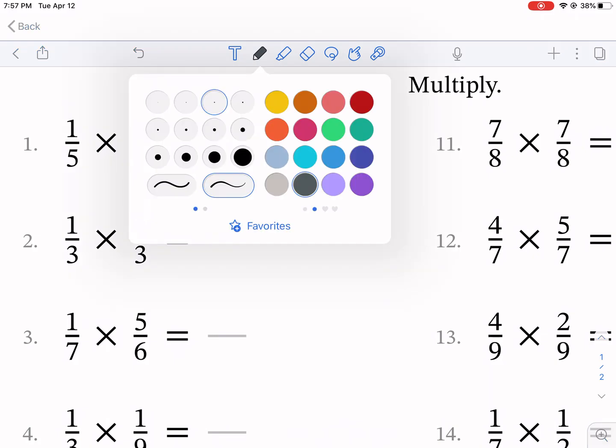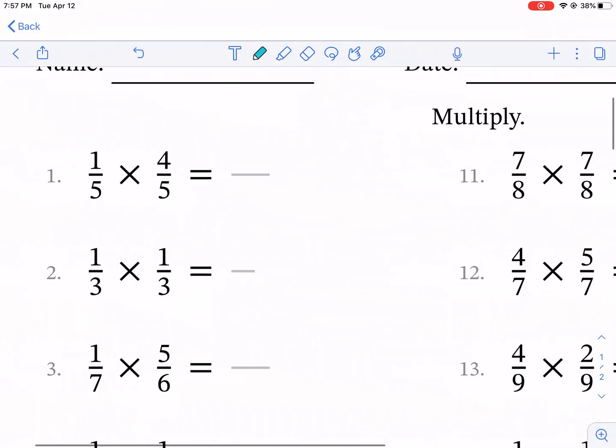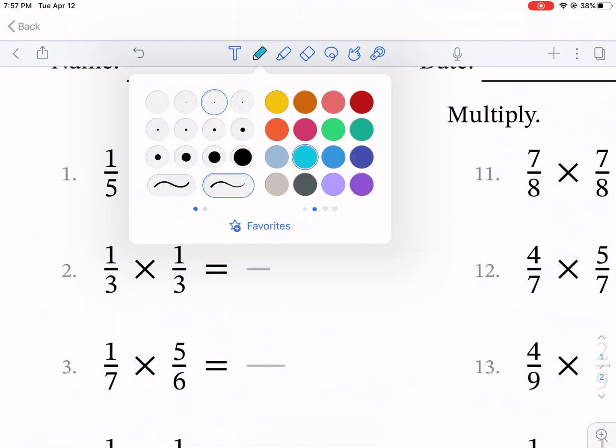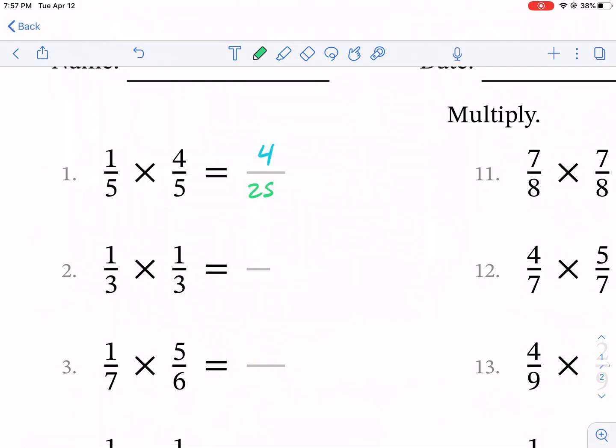Again, we're doing top times top, bottom times bottom. I think it was blue. So we do 4 times 1 is 4, 5 times 5 is 25. And that's what we're going to do for this. I'm going to switch to purple so I don't have to do so much switching.